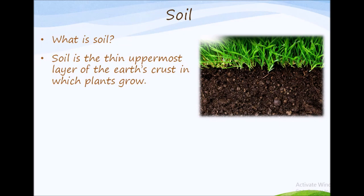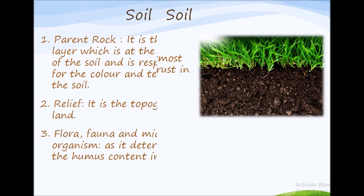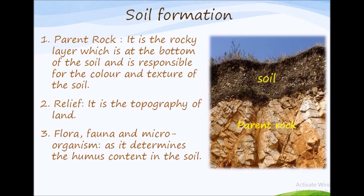As we know what is soil, let us see how soil is formed. There are total five factors which affect the formation of soil. The first one is the parent rock. It is the rocky layer which is at the bottom of the soil and is responsible for the color and texture of the soil.